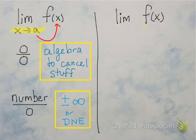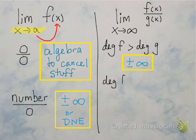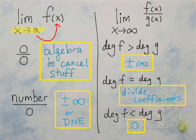For limits as x approaches infinity, you usually have a fraction — one thing divided by another. There are some shortcuts. If the degree of the top is bigger than the degree of the bottom, you'll get positive or negative infinity. If the degrees are equal, divide the coefficients of the largest power of x on top and bottom — that will be your limit. If the degree of the top is less than the degree of the bottom, you get 0. These three tricks only work when you see the limit as x approaches infinity.